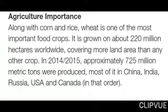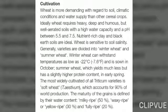Wheat is cultivated along with corn and rice and is one of the most important food crops, grown on about 200 million hectares worldwide — covering more land area than any other crop. Most production comes from China, India, Russia, the USA, and Canada.